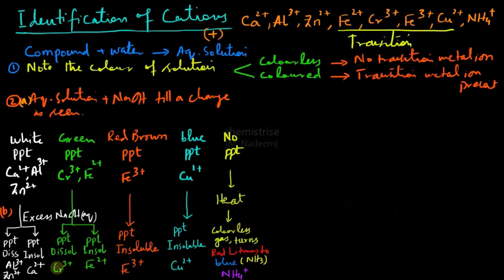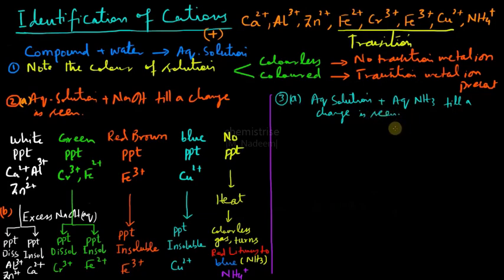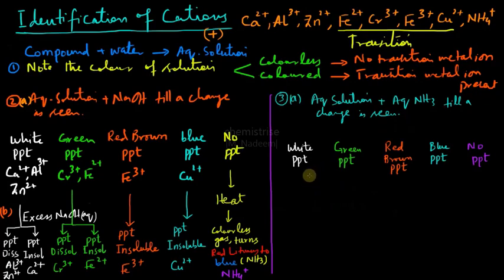We have identified almost all the cations, but we are still unable to distinguish between aluminum (Al³⁺) and zinc (Zn²⁺) ions. For that we perform Test 3, in which we add aqueous ammonia to the aqueous solution until a change is seen. We again get different colored precipitates. A white precipitate in this case is due to two cations: aluminum (Al³⁺) and zinc (Zn²⁺).